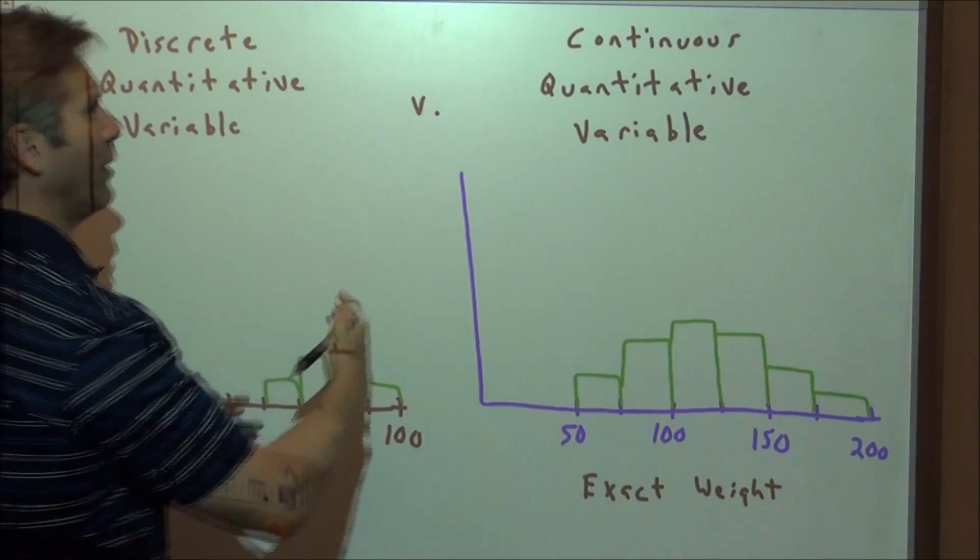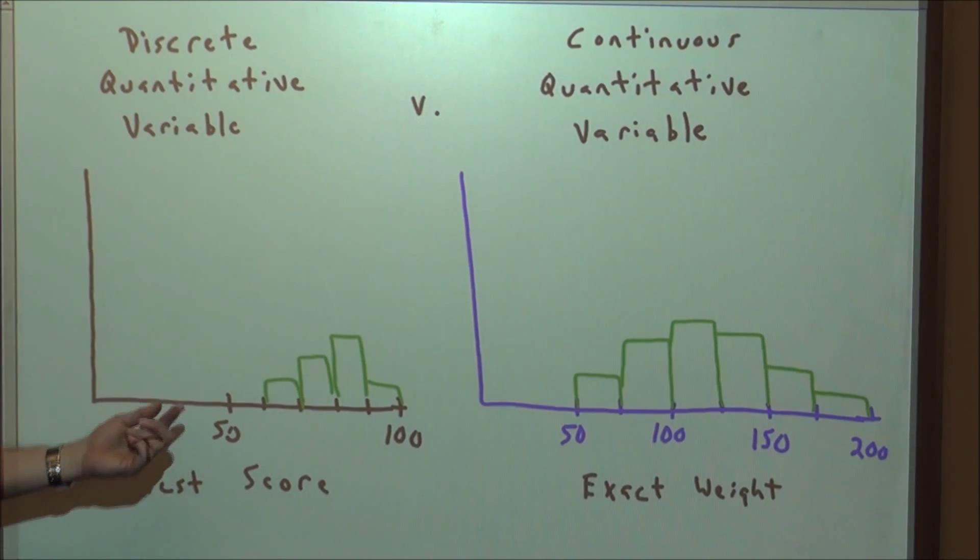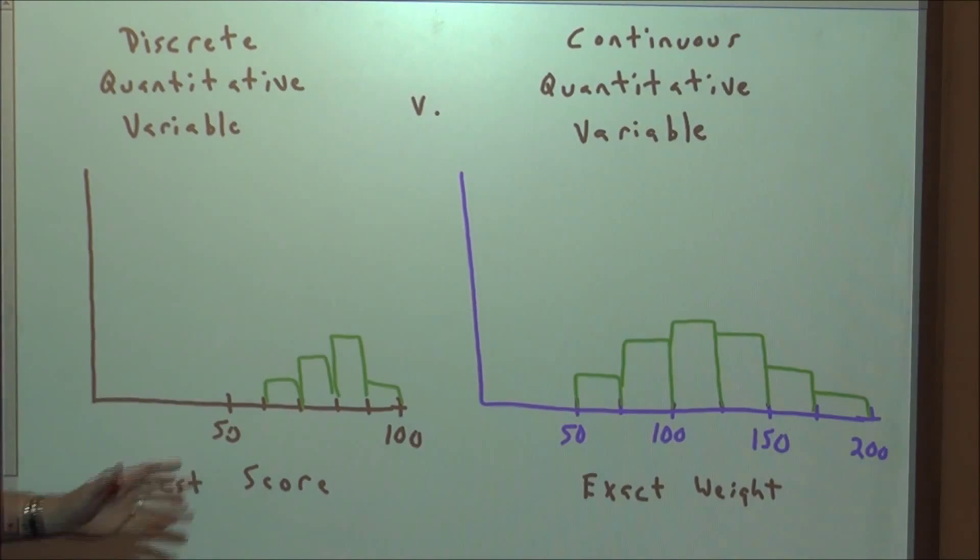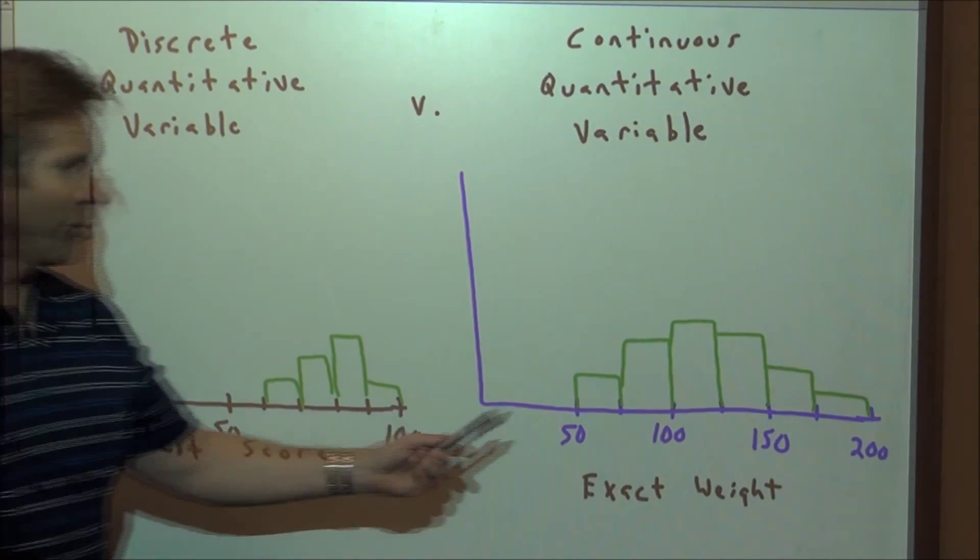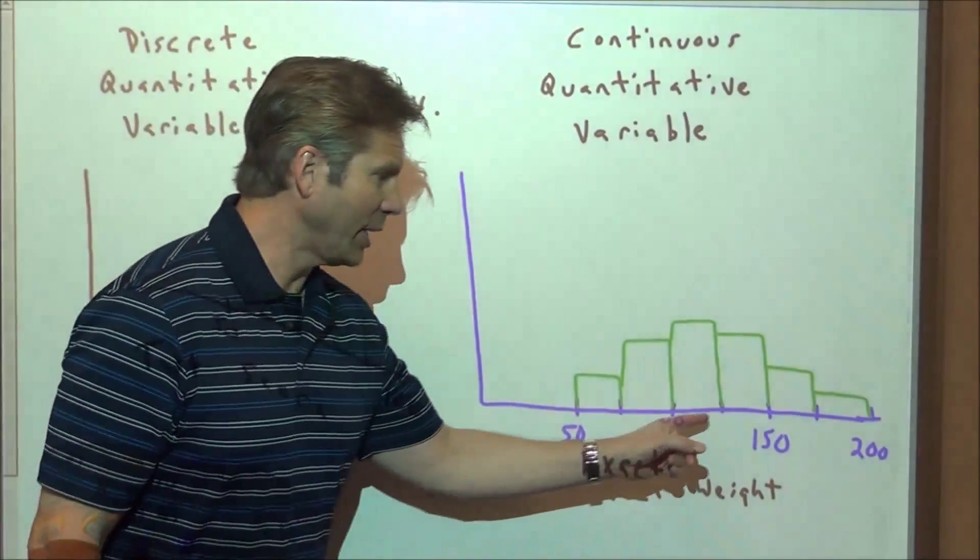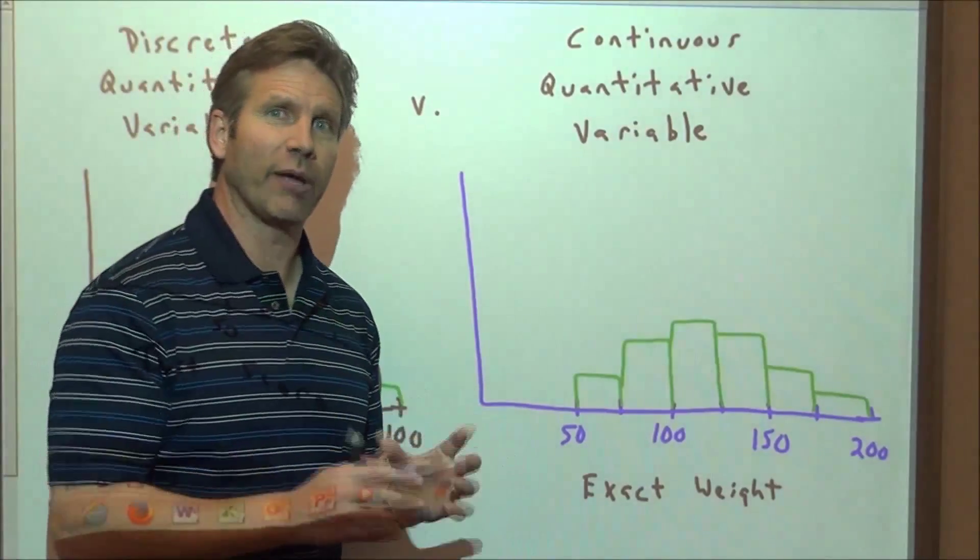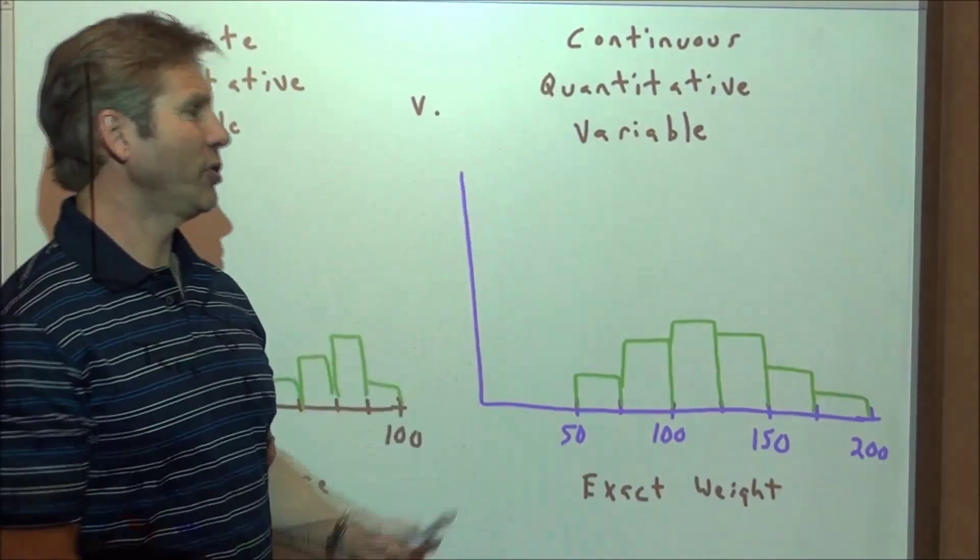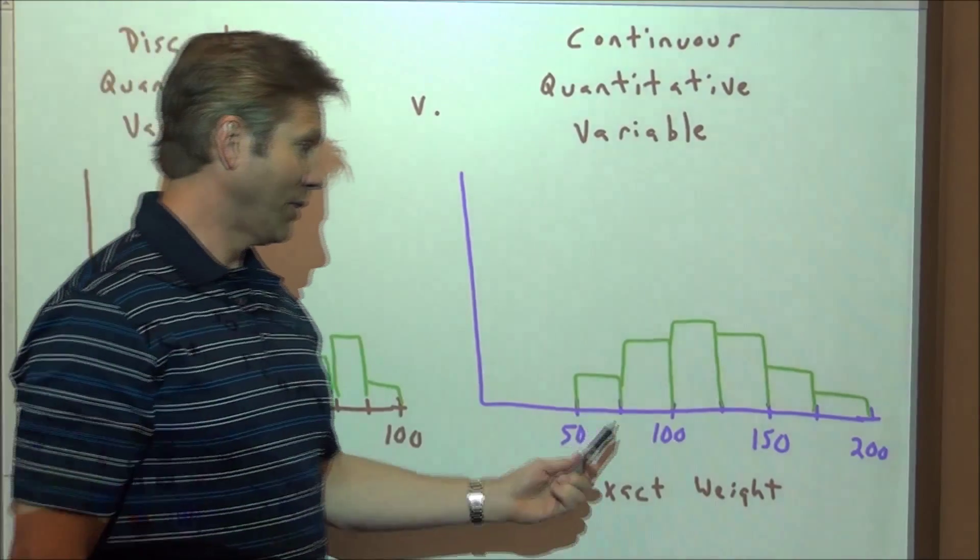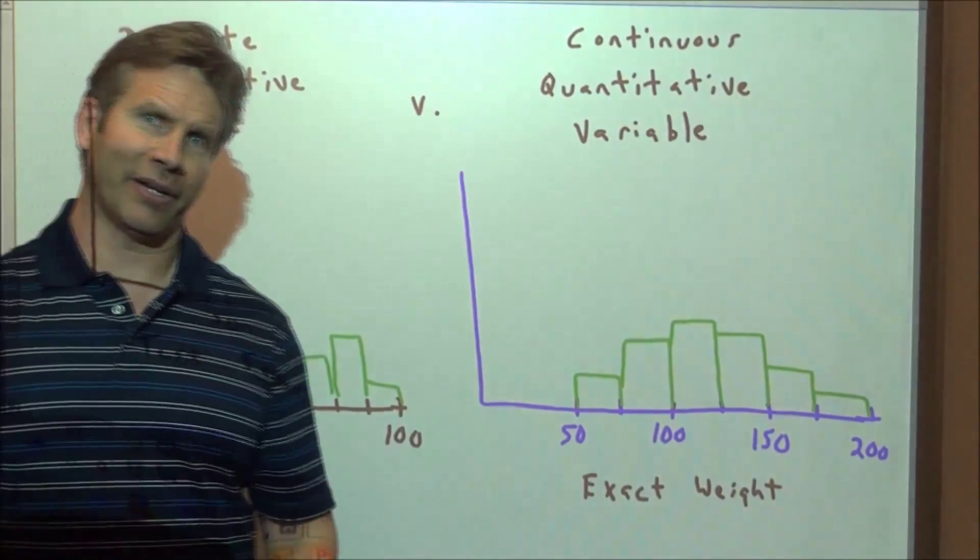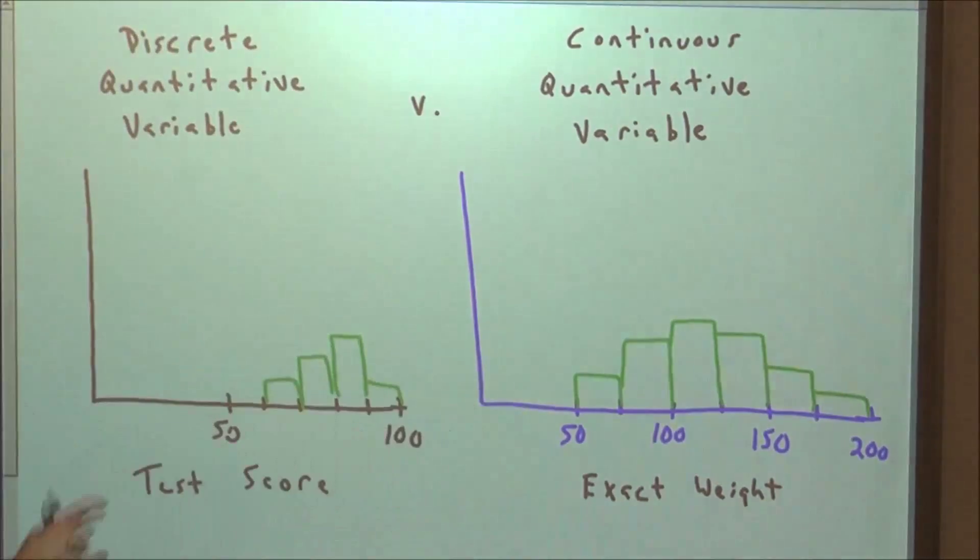Now we can have discrete quantitative variables versus continuous. If we're going to test scores, then we can get an 87 or an 88. Let's assume we're not going to get an 87.1 or something like that. So we would have a histogram, and these would be discrete values that you could take on. But if we look, let's say, of exact weights of students in a class, let's suppose, and the weights, somebody could weigh like 148.233 pounds. So now there's infinitely many weights that you could have in here. Therefore, it's referred to as a continuous random variable. So this is actually a second grade class here. We have an obesity problem here in America, folks.